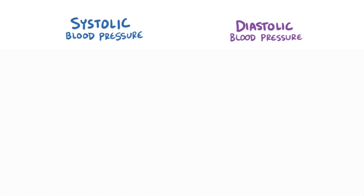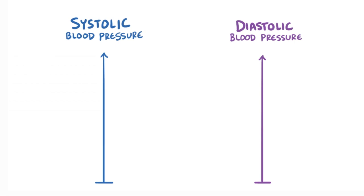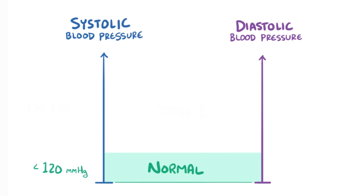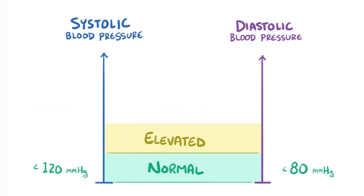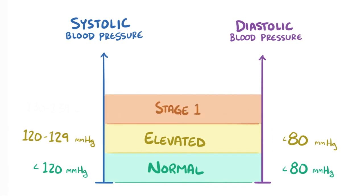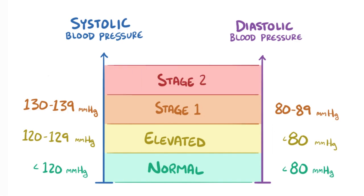The guidelines for categorizing blood pressure have recently changed to reflect a growing body of evidence that shows even moderately high blood pressures can significantly increase your risk for developing heart disease. Normal systolic blood pressure is defined as less than 120 mmHg, and a normal diastolic pressure is less than 80 mmHg. Elevated systolic blood pressure is considered between 120 and 129 mmHg and less than 80 mmHg on the diastolic side. Stage 1 hypertension is defined as anything that's 140 mmHg or higher on the systolic side and 90 mmHg or higher on the diastolic side.